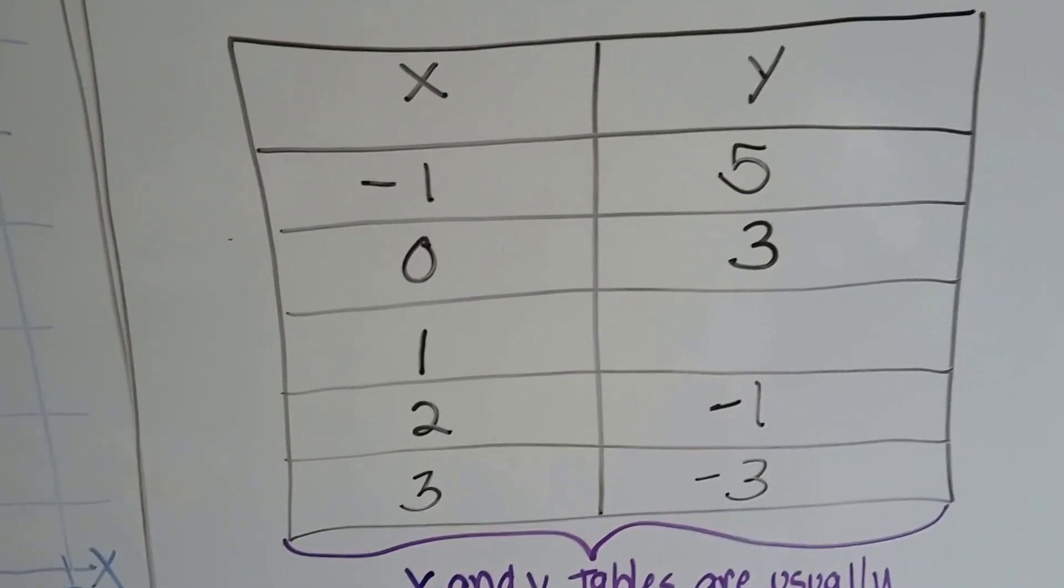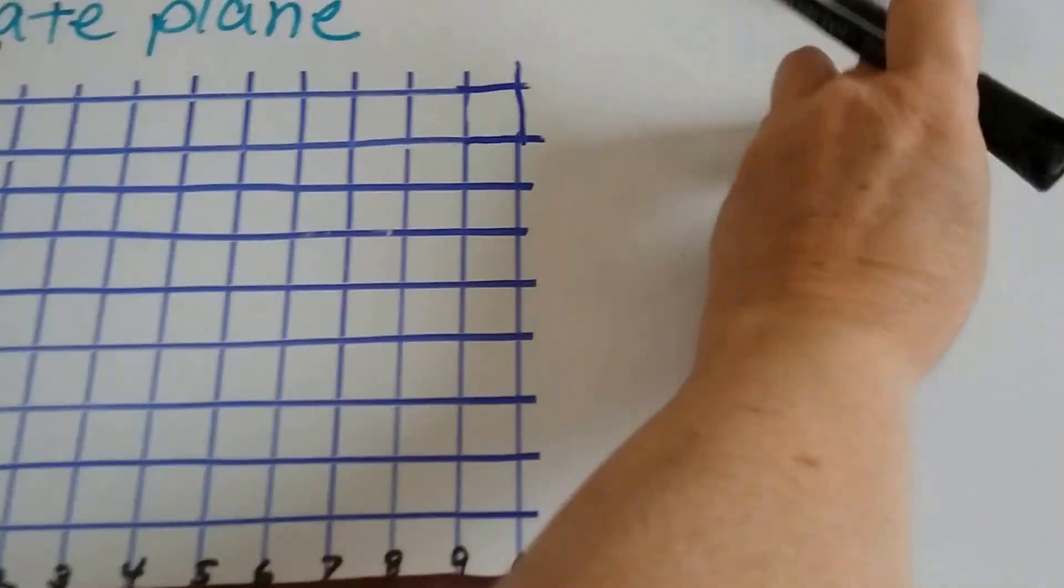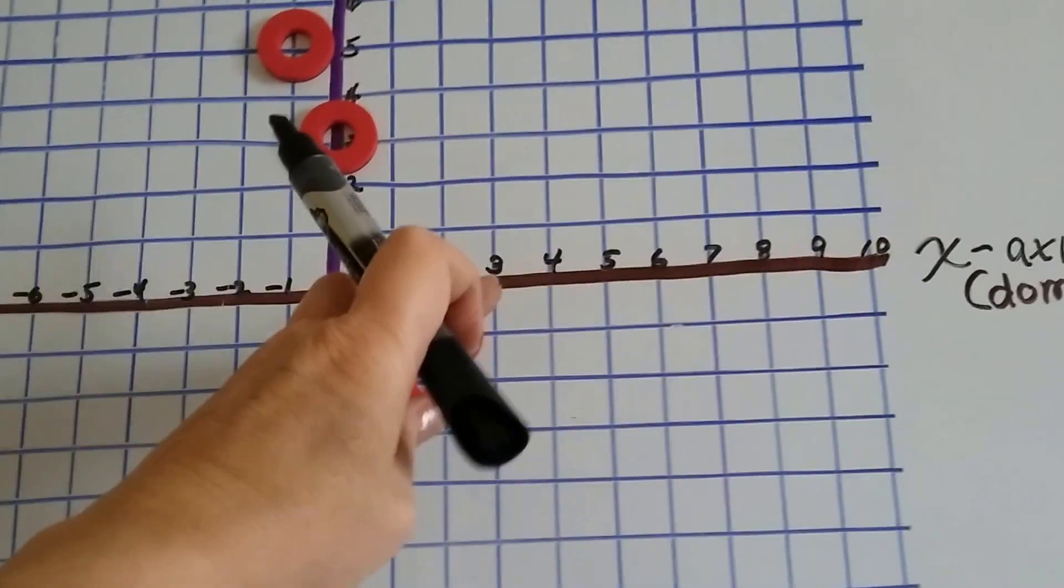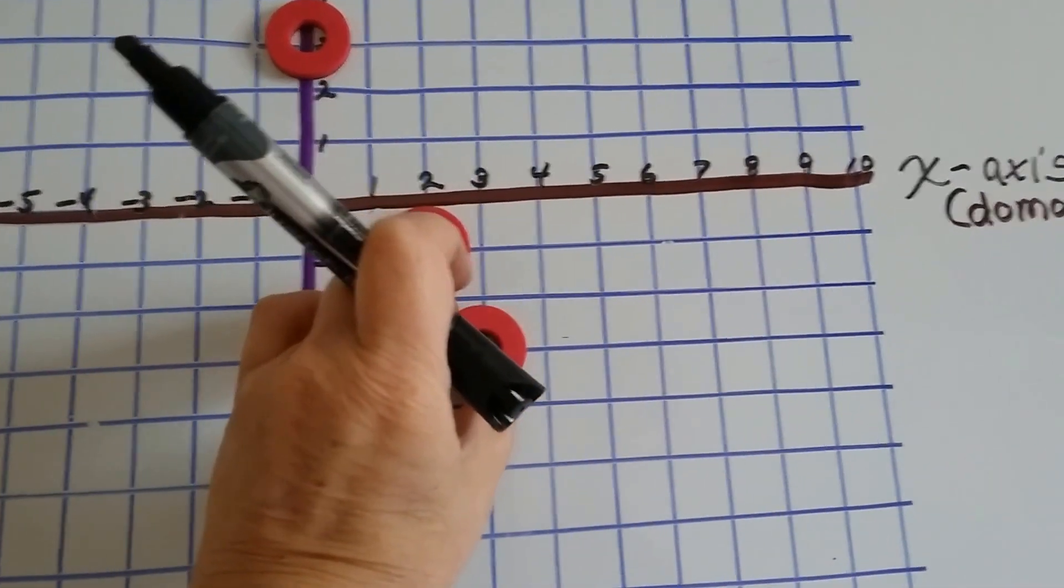And then our last one is 3 on the x and negative 3 for y. 3 on the x, that's right here, and negative 3 on the y is right here.